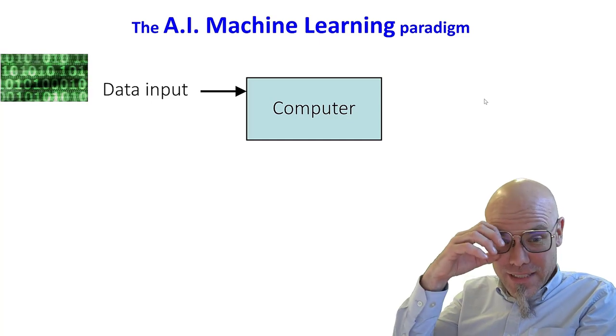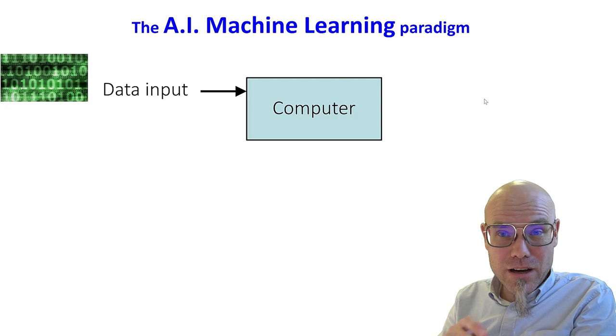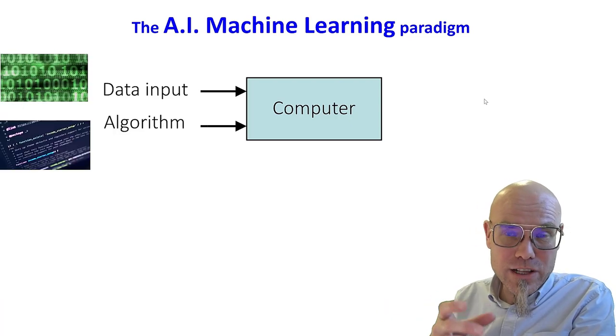So traditionally, and here's the difference. Traditionally, when we think about an algorithm, we say we have data input and then we use an algorithm.